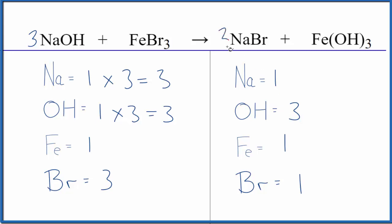We could just put a three in front of the sodium bromide, one times three. That would balance the sodiums and three goes to everything. So one times three, that also balances our bromine atoms and we're done. This is the balanced equation for NaOH plus FeBr3.